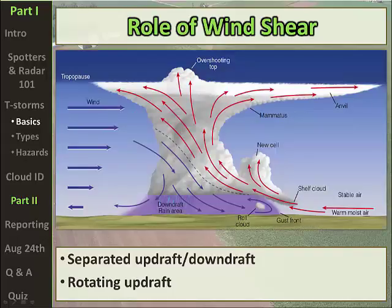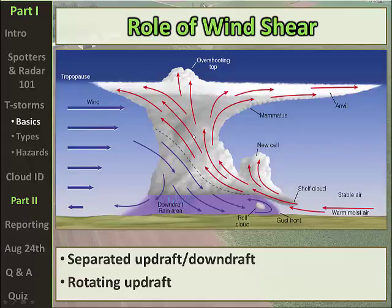One last diagram showing the role of wind shear: in this conceptual model of a thunderstorm, the wind shear profile shows an easterly wind at the surface and a strong westerly wind in the upper levels — indicating a high amount of wind shear. The updraft and downdraft are separated due to this high shear, and again, the fact that the updrafts and downdrafts are separated allows for a longer-duration severe weather threat.